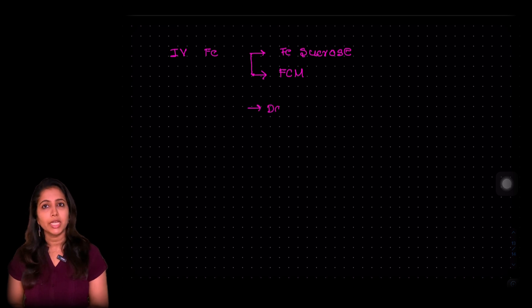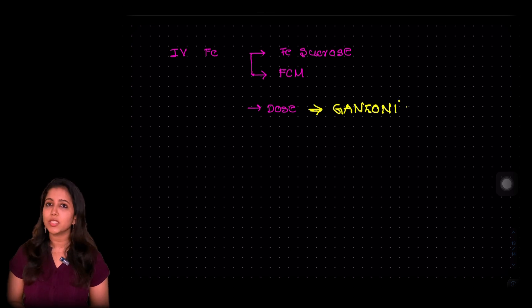Regarding IV iron, the preparations that are available include iron sucrose and the other one is FCM or ferric carboxymaltose. This is calculated using the Gansani's formula.